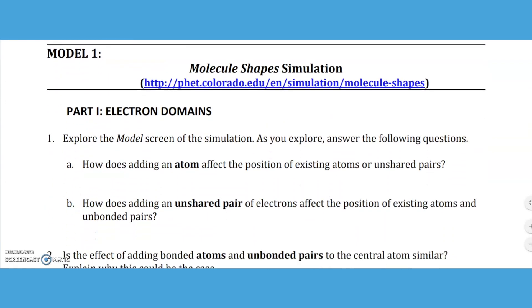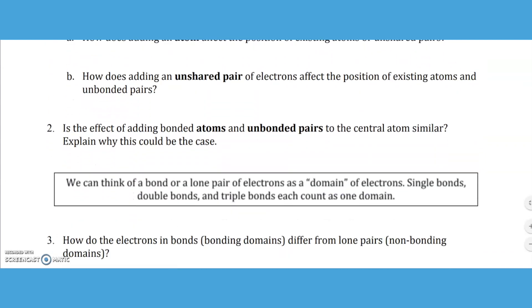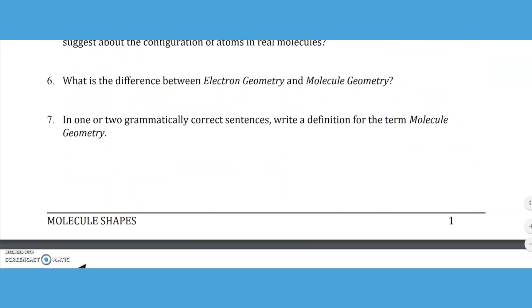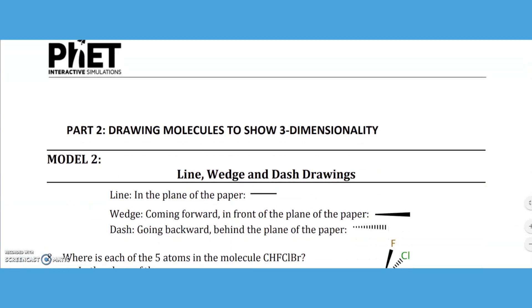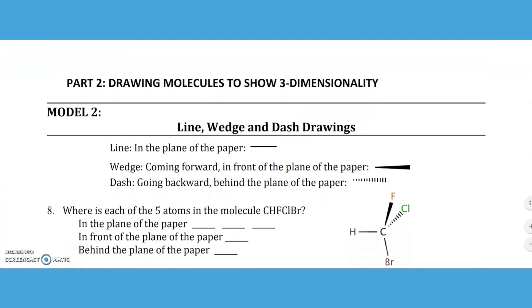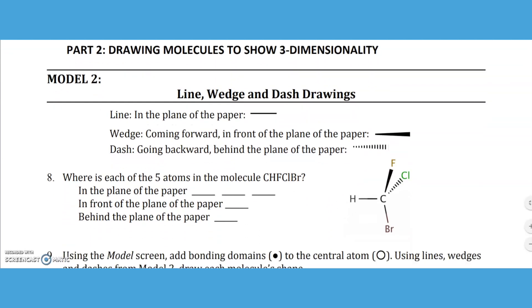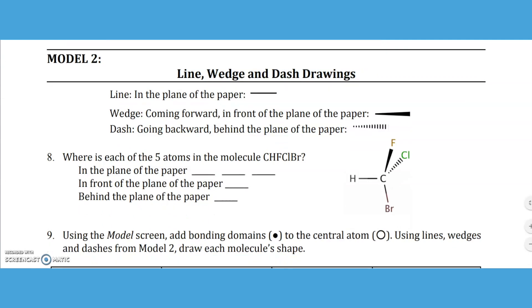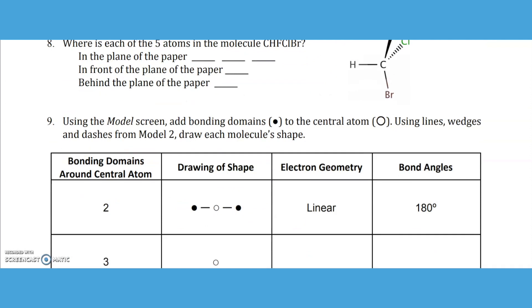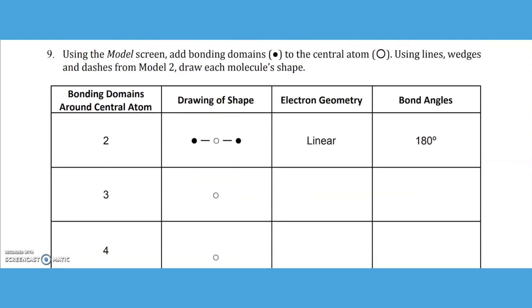Part one walks them through questions of electron domains, questions one through seven. Then they have part two, drawing molecules to show three-dimensionality. That explicitly shows them how to do a line in the plane of the paper, a wedge coming forward, and a dash for the drawings. This is good practice of the best way to draw a structure.